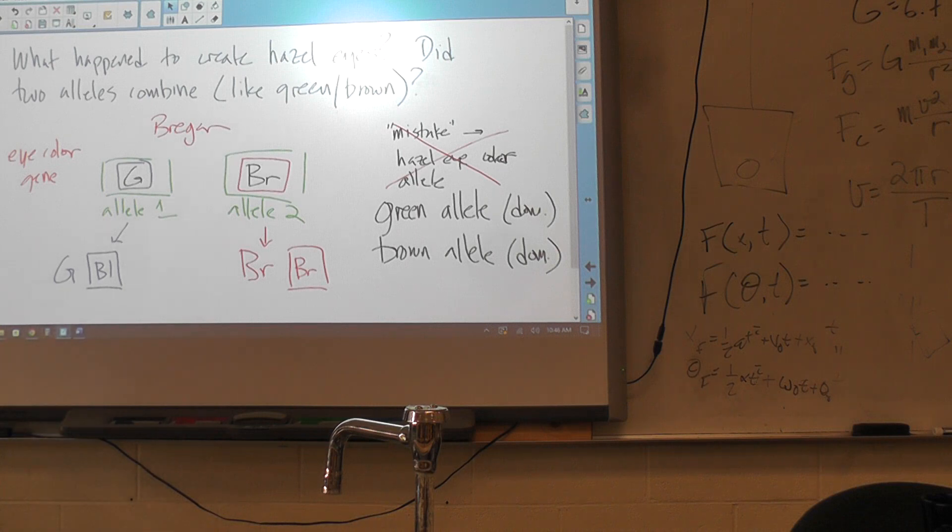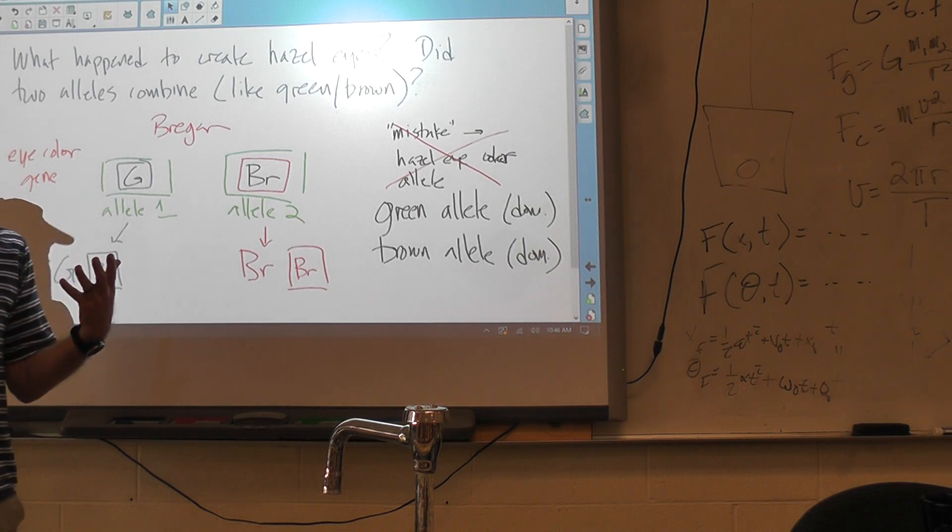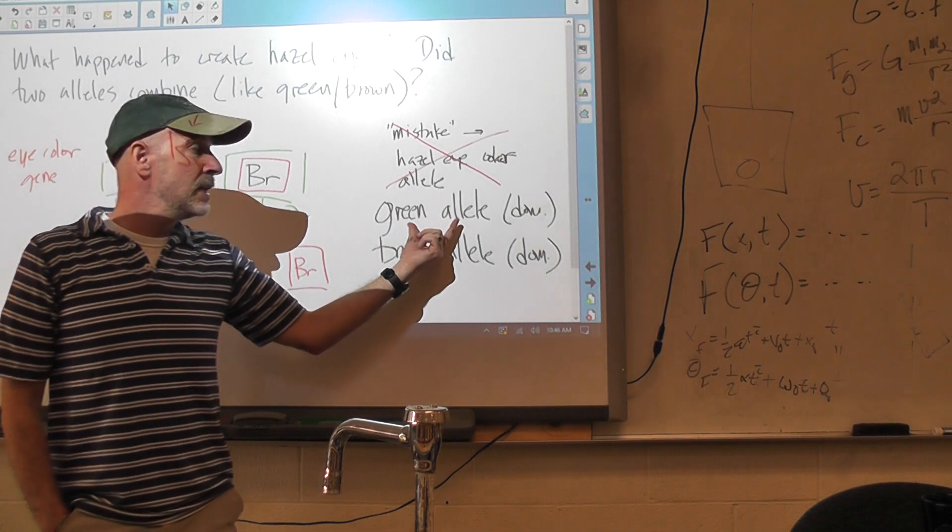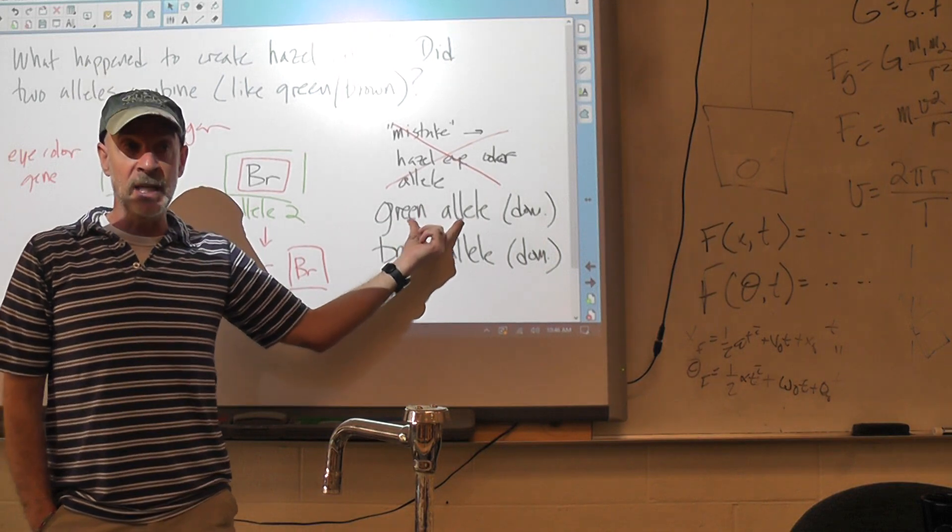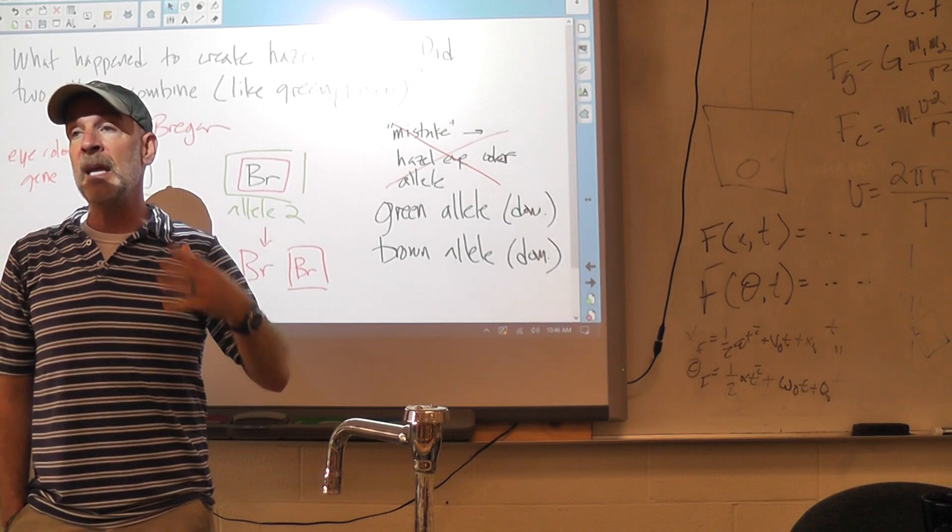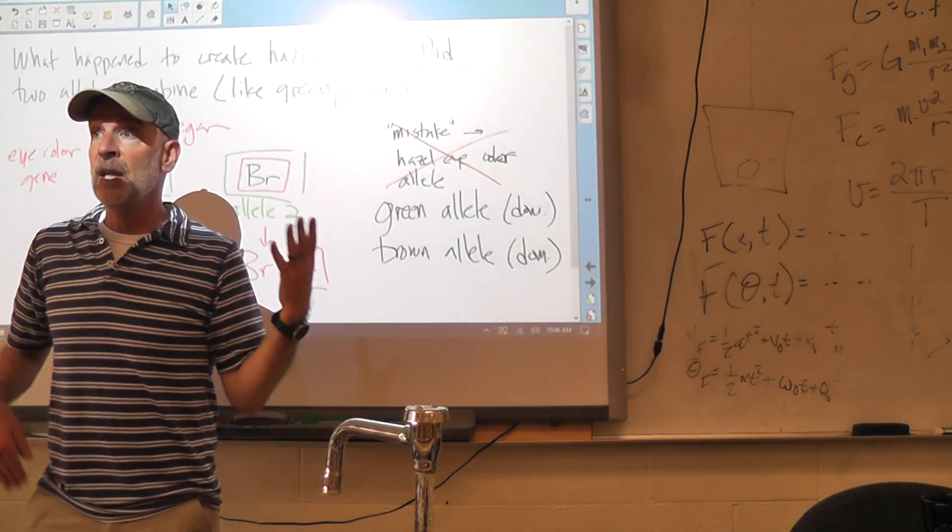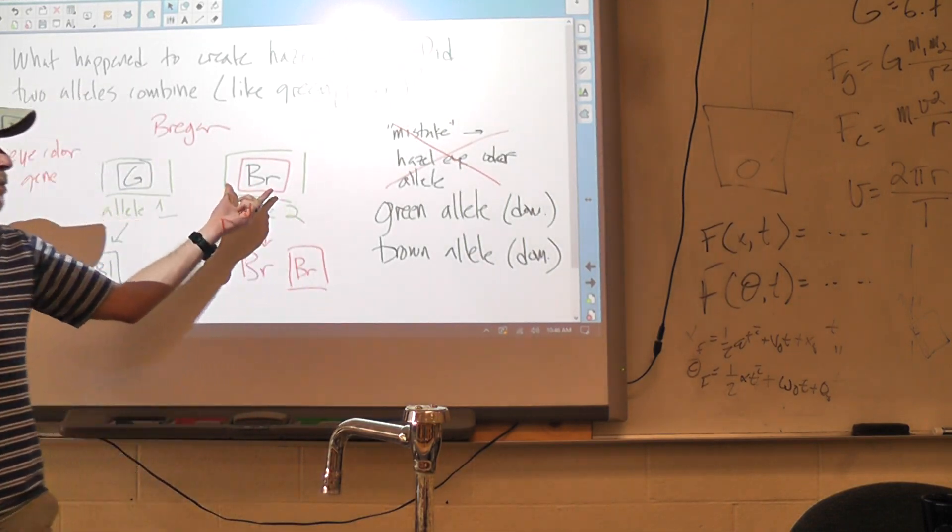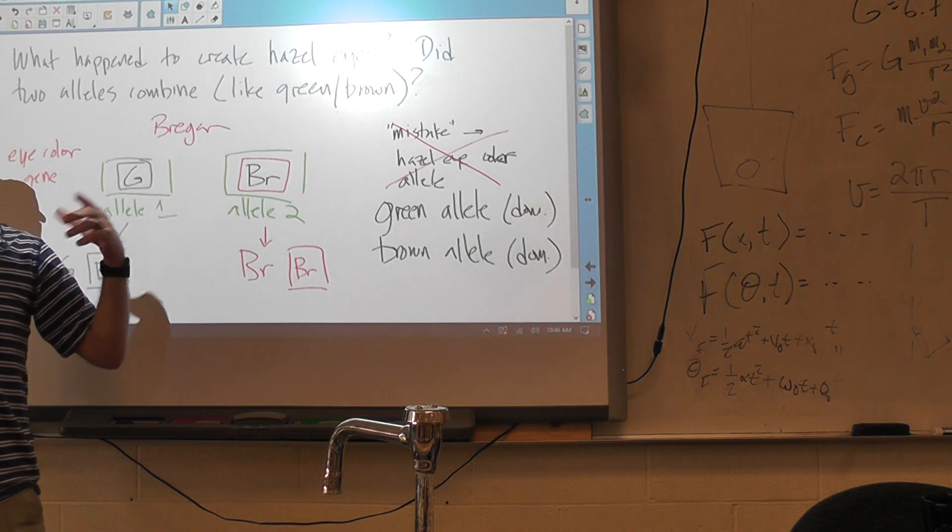In general, it's a pattern that we call co-dominance. And this gets at what I was telling you all about what a dominant and a recessive allele really means. A dominant allele is just one that does something. So in this case, a green allele would produce a pigment that creates a green color. A brown allele would produce a pigment that makes a brown color. Both of those alleles are present, both of those pigments will be produced. The resulting eye color will be a mix of those pigments.